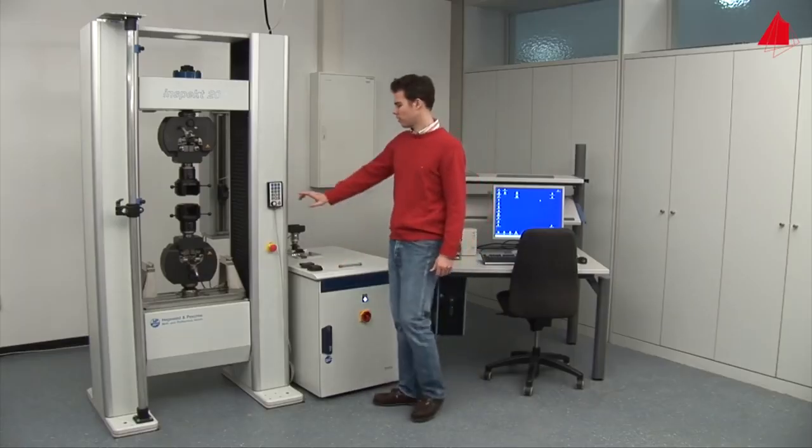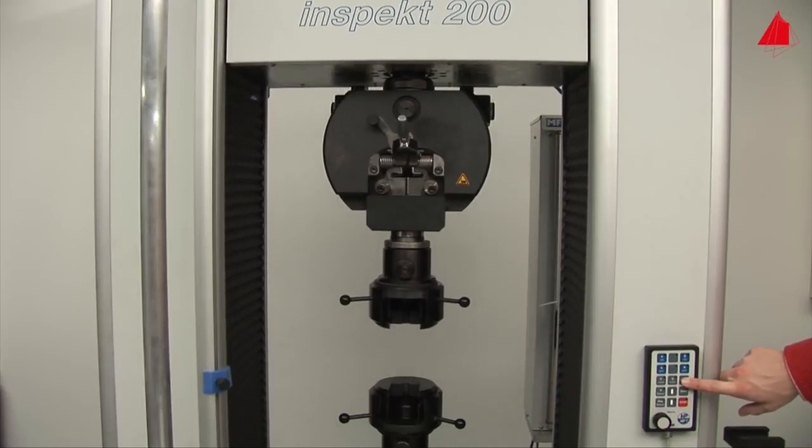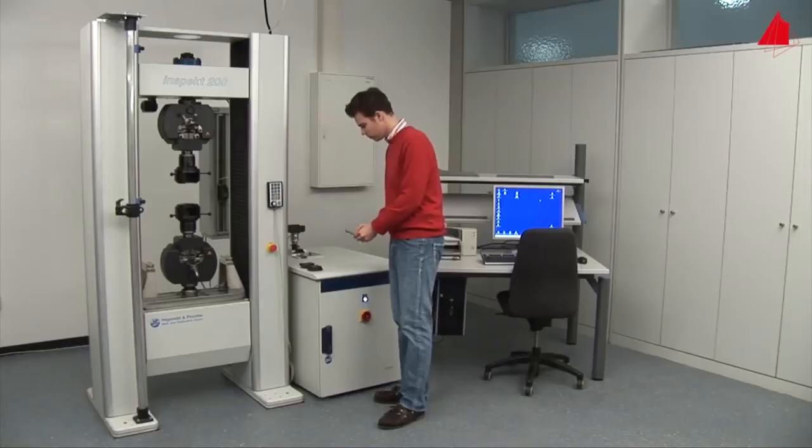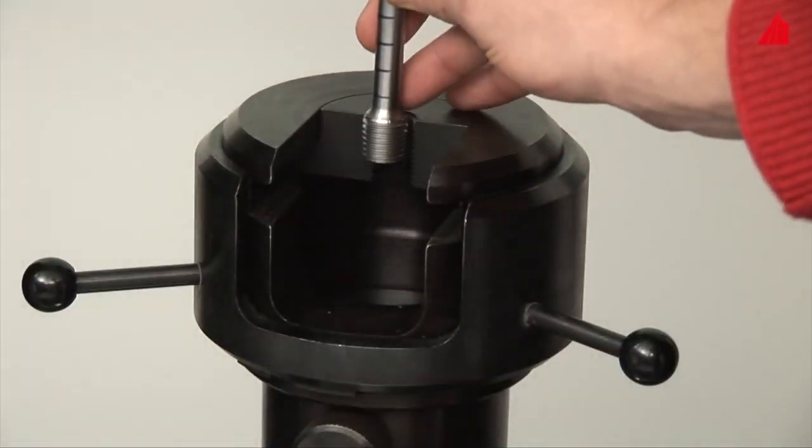Using a hand control, the tester moves the upper crosshead into its correct starting position. Now he can place the threaded ends of the test piece in the lower and upper grips of the testing machine.